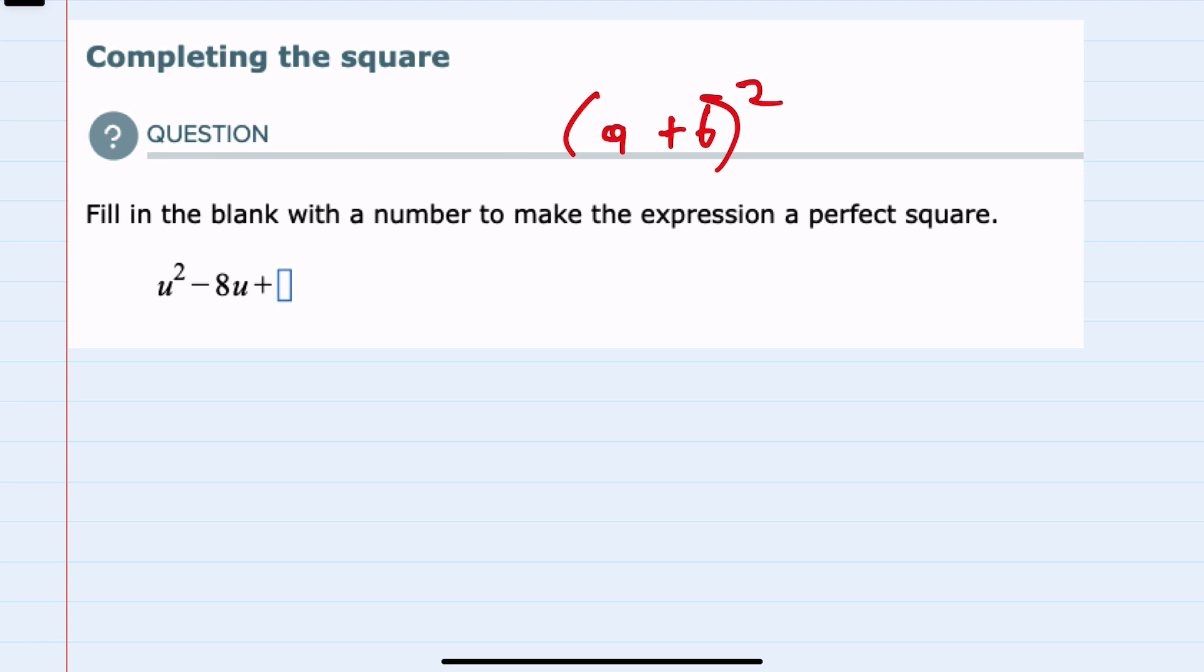And our process for doing that is to look at that center coefficient. Here, 8. We are to take half of that number and square to get the last term. And since half of 8 is 4, squared would be 16.